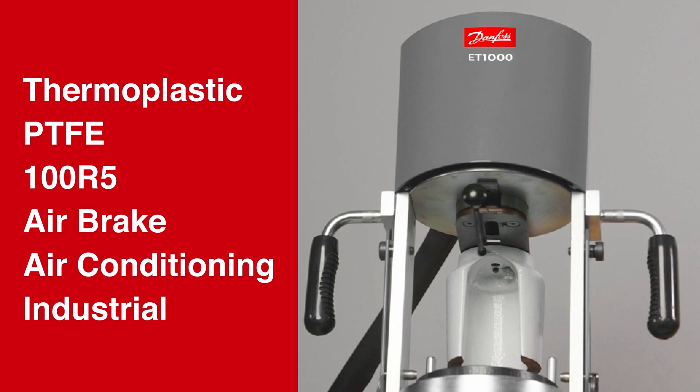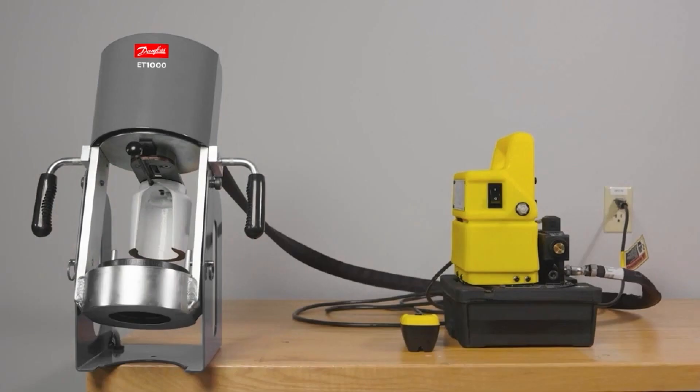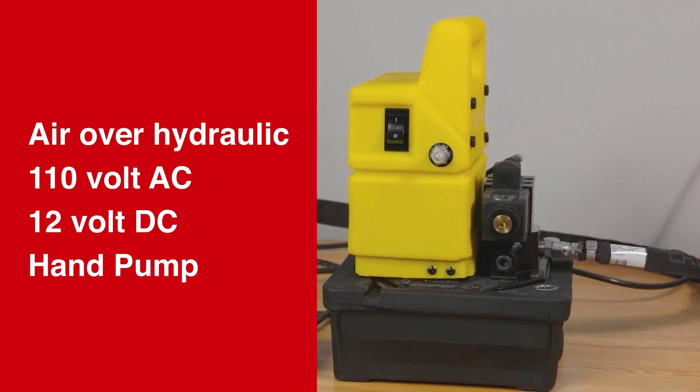The ET-1000 also has the capability to assemble a wide variety of hose types including thermoplastic, PTFE, 100R5, airbrake, air conditioning, and industrial. The ET-1000 offers four available pump options: air over hydraulic, 110 volt AC, 12 volt DC, or a hand pump.